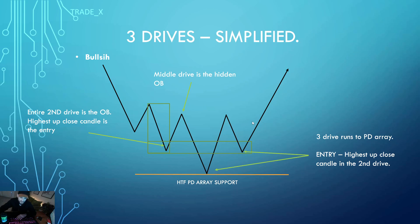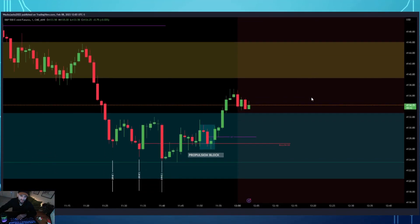This is accumulation to move the market higher. We have drive one, drive two - we're doing nothing - we have drive three. We're aware now that this middle drive is a hidden order block. We're looking for price to move away and come back to the lowest down close candle inside of drive two. That is our entry to go higher. Our stop goes below the low of the third drive. If you don't believe me, just wait - we're going to look into some fixed charts. This is a bullish example.